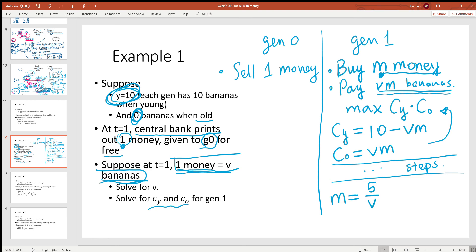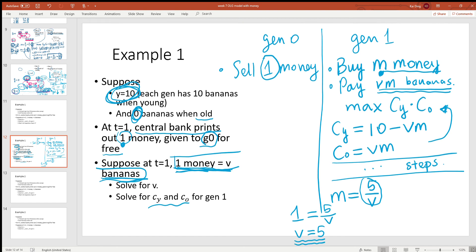Now in the market, generation zero wants to sell one money. Generation one wants to buy 5 over v money. Supply equals demand: one equals 5 over v, and that implies v equals 5. So in this market every piece of money is going to sell for 5 bananas.